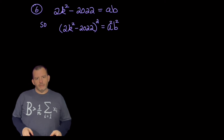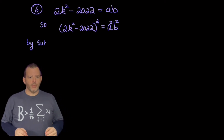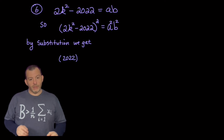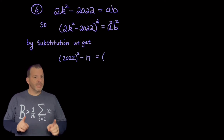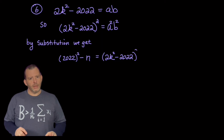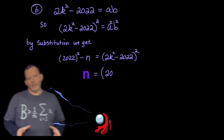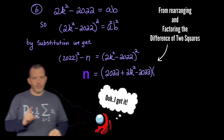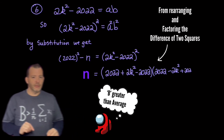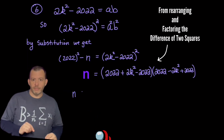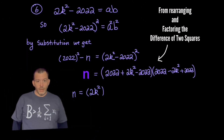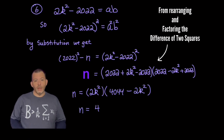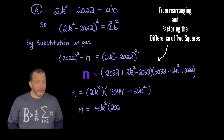Now that we've looked at the internal structure of the problem, let's look at our simplified equation for ab and substitute in from our system of equations — a² and b². This gives us an equation involving n, which is going to allow us to find values for n that solve our problem. We finally get n = 4k² × (2022 − k²).